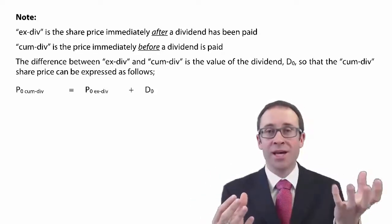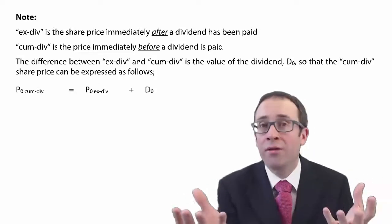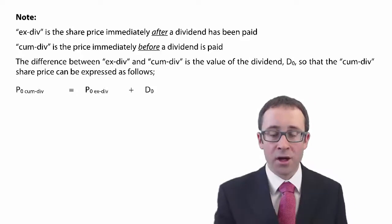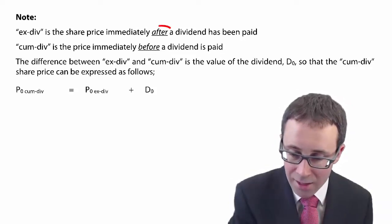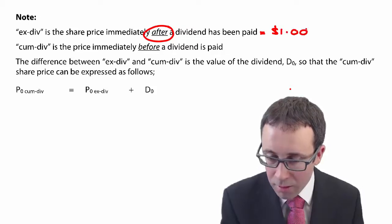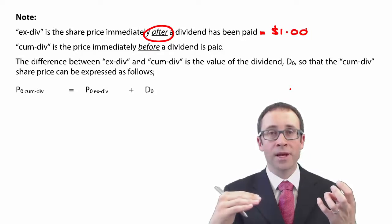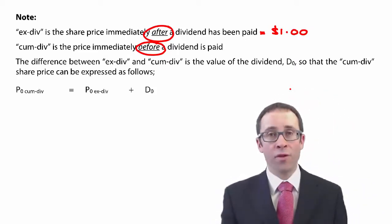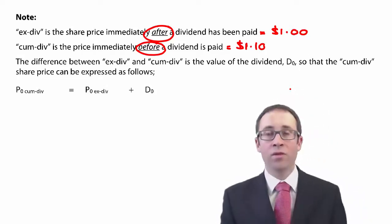All that's different now is that I have a physical $0.10 dividend and a $1 share. If that share price did not fall, then we would be too wealthy, because we'd have conjured out of nowhere an additional $0.10. So, with regard to terminology: the ex-div share price is the price immediately after the dividend has been paid — in our example, that was $1. The cum-div price is the price immediately before the dividend is paid — in our example, that was $1.10.